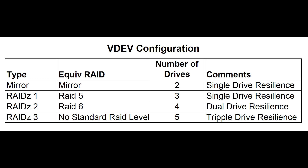The more drives used in creating this VDAV increase capacity, and you still only get three drives of fault tolerance. This configuration isn't really that common, and is typically only used for arrays that are around ten or more drives, as you lose three full drives to fault tolerance, making it kind of impractical for smaller arrays.